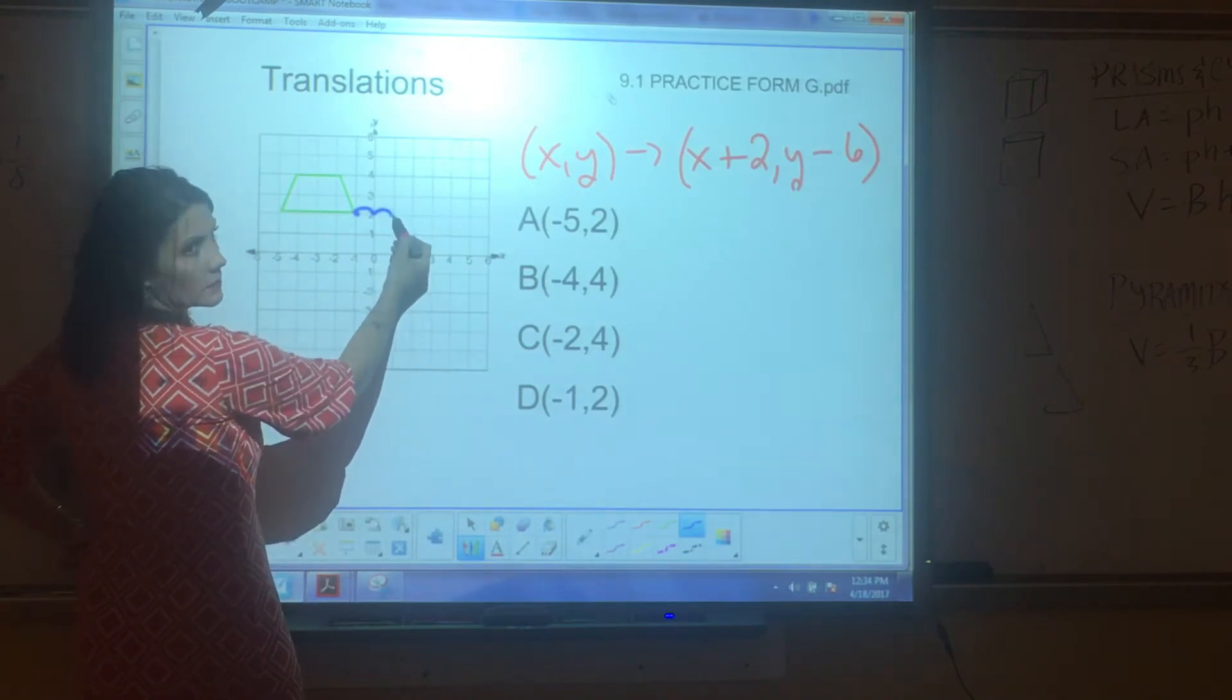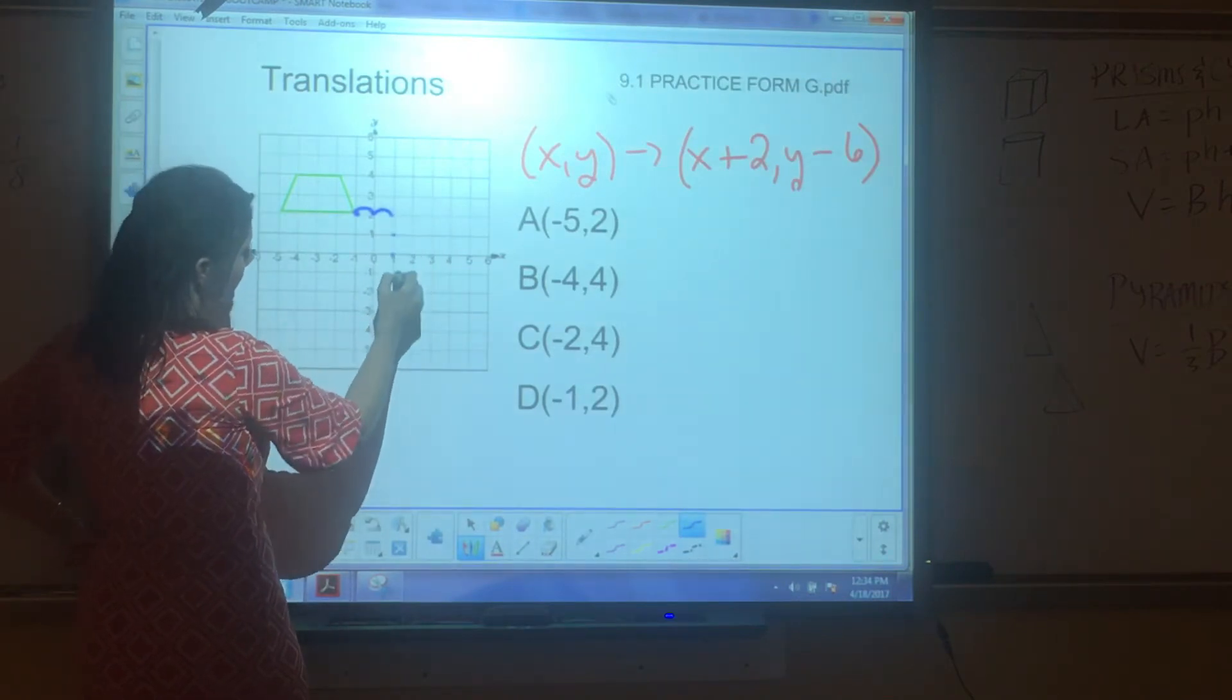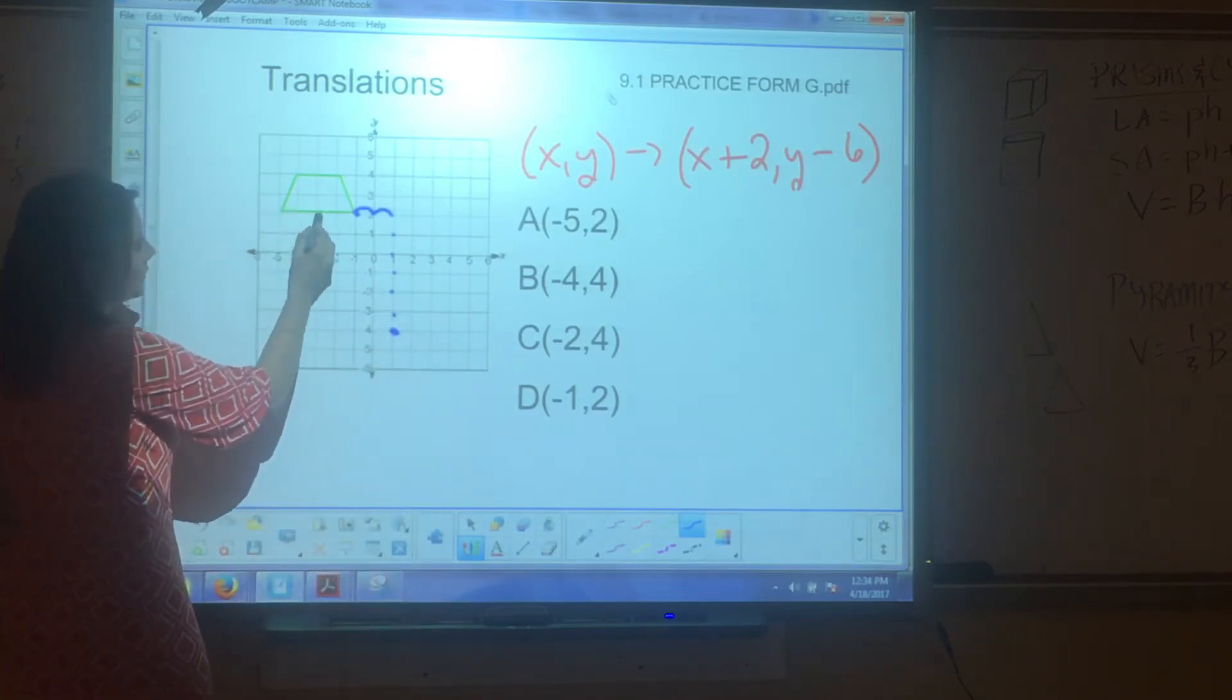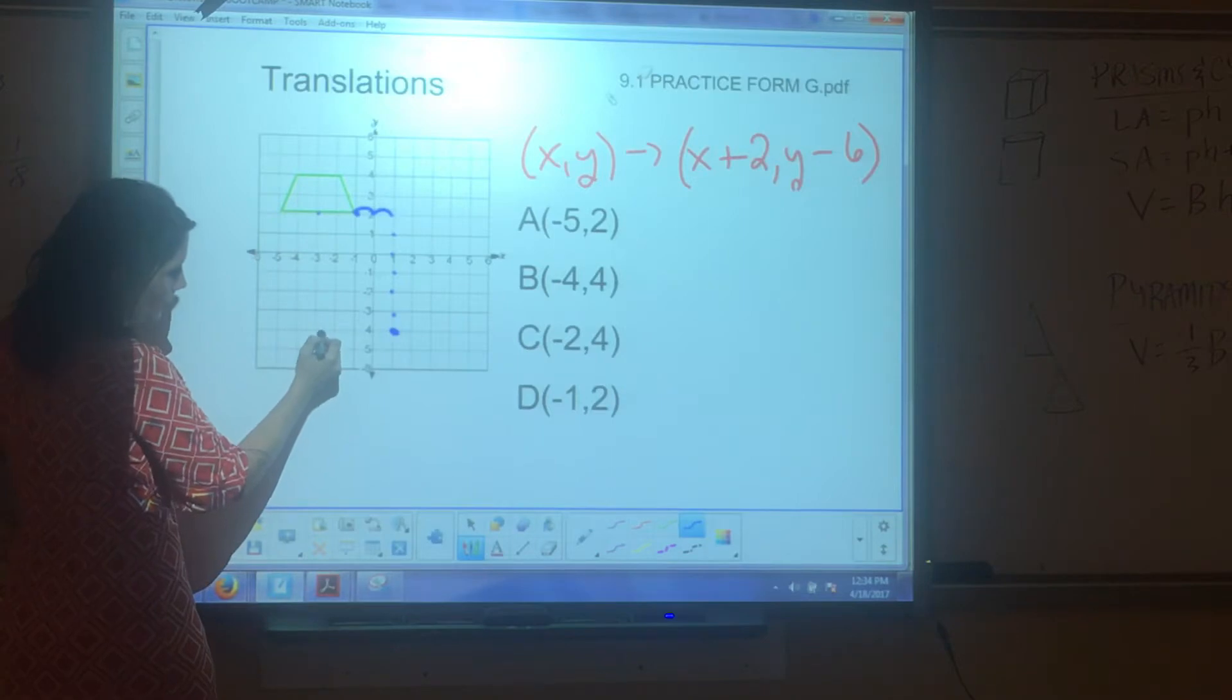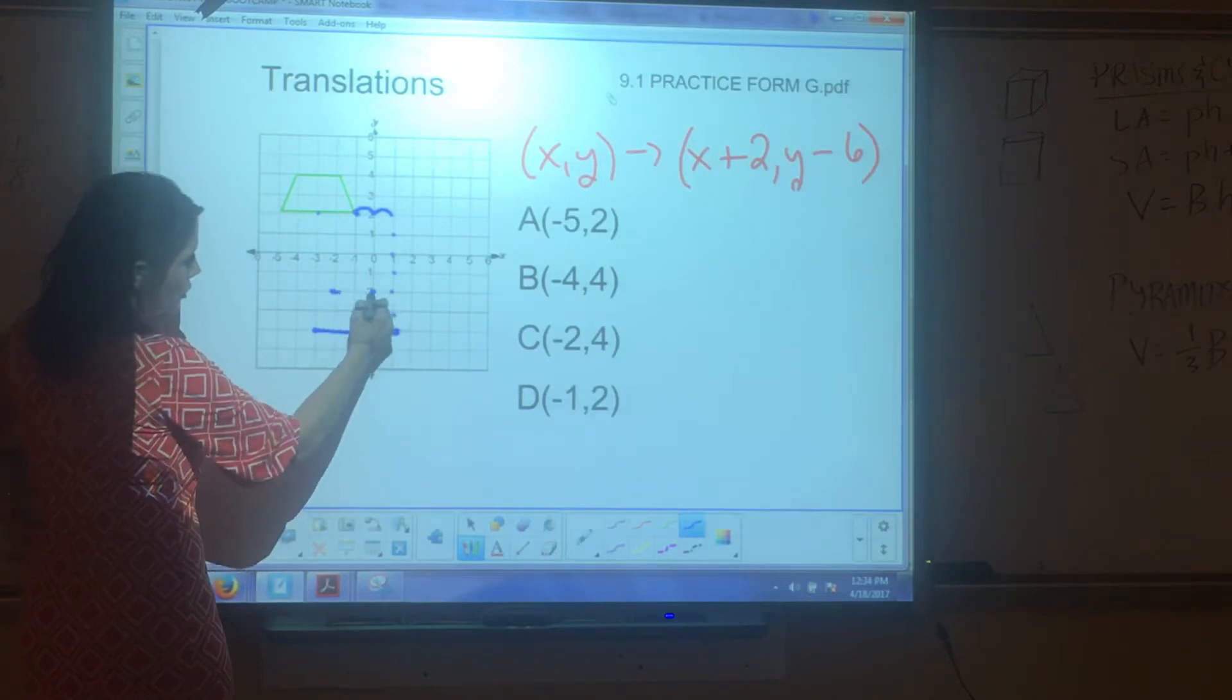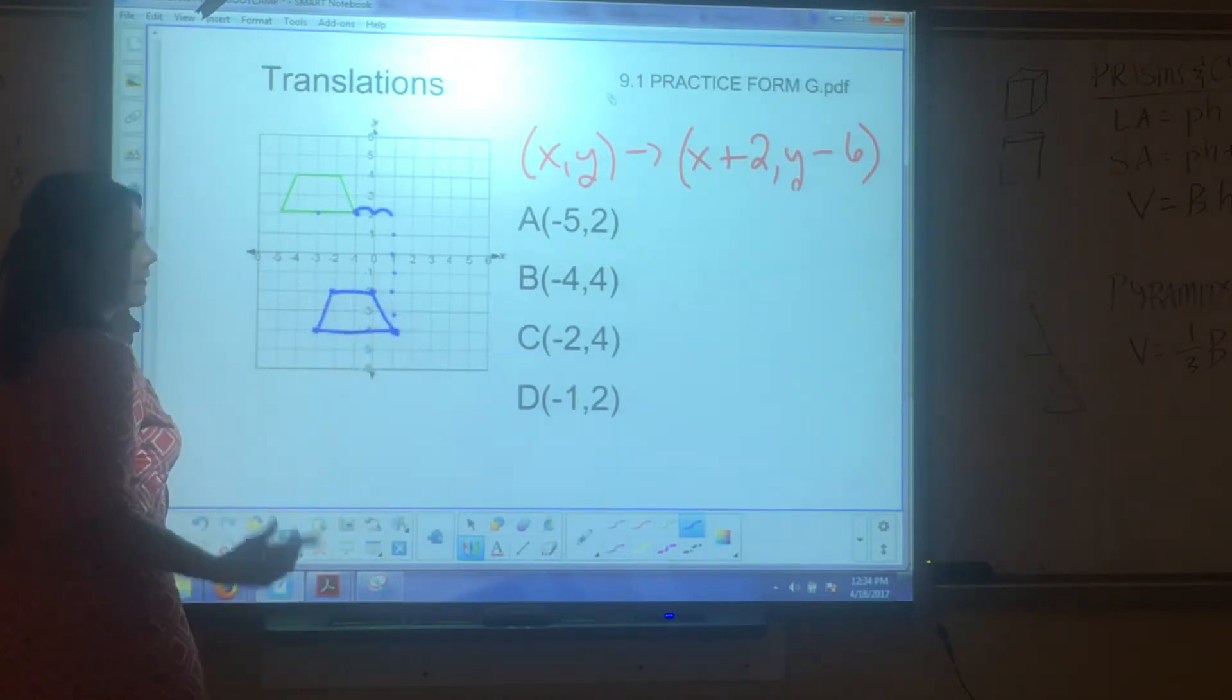Down 6. 1, 2, 3, 4, 5, 6. Boom. Do that with all of them. 1, 2. 1, 2. Okay. Boom. Now, this is what? Up 2 to the right 1. Up 2 to the left. That's it.